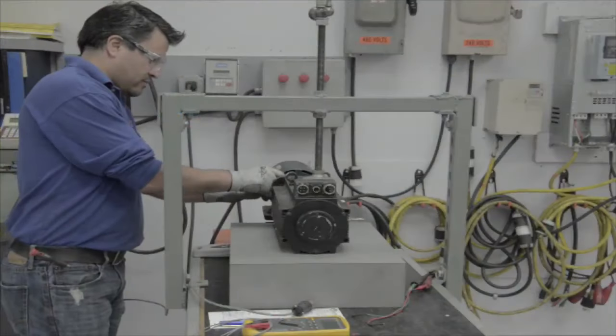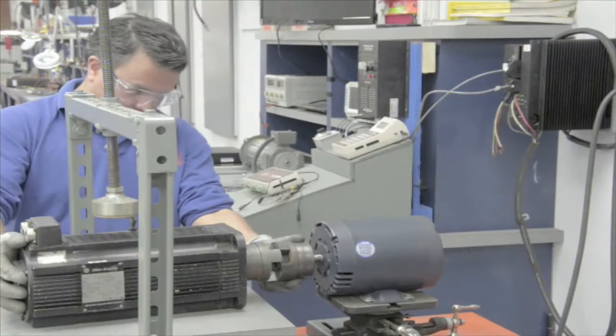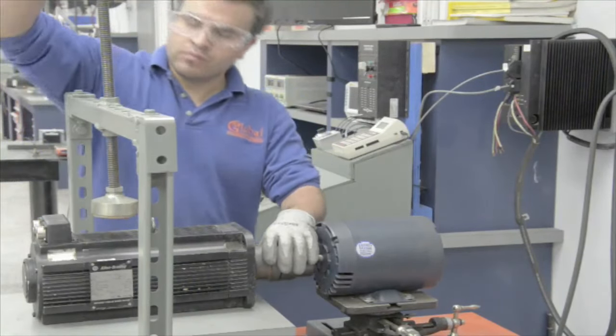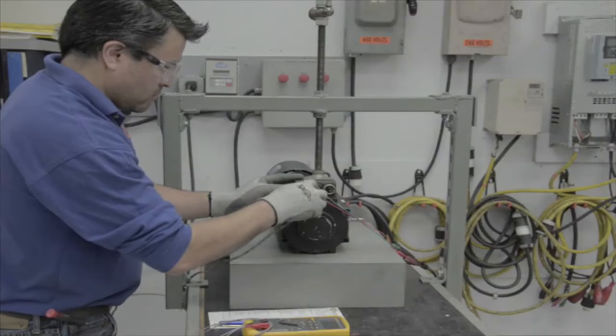The technician will hook the motor to the KE test stand. He will couple the servo motor to an AC motor that is run by an adjustable speed AC motor control. He secures the motor in place and will run the motor.